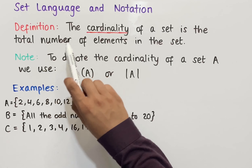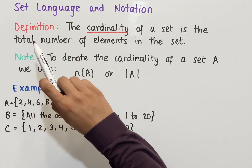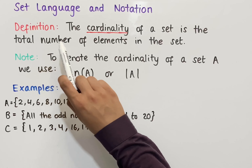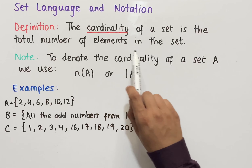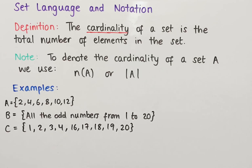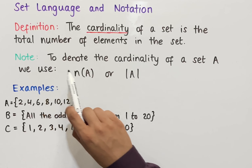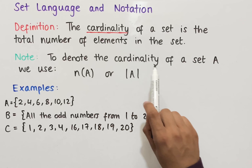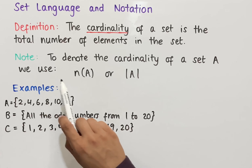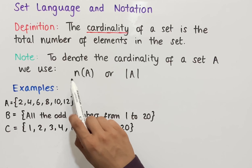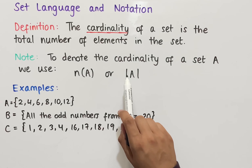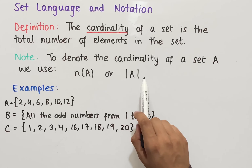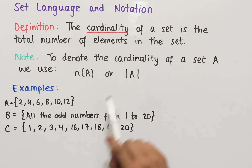Let's look at the cardinality of sets. The definition is: the cardinality of a set is the total number of elements in the set. To denote the cardinality of a set A, we use either N(A) in brackets, or two straight lines with A in the middle, where A is any set.